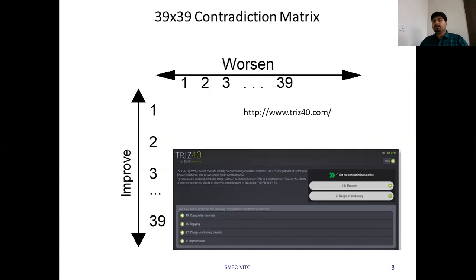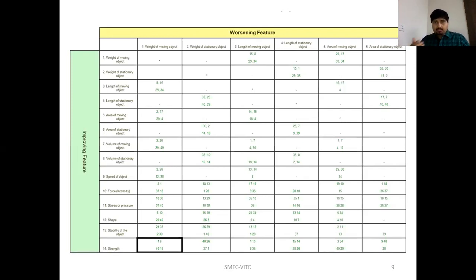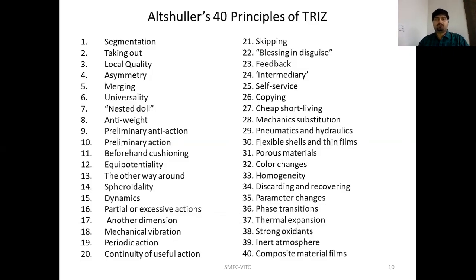You need to identify two parameters: the strengthening parameter you want to improve in your product, and the worsening factor that you need to identify. A snapshot from triz40.com shows how you can directly input the strengthening factor and the worsening factor, and automatically receive the principles which can be utilized to develop a systematic way of inventing new ideas. Based on the two contradictory features, you identify the intersection in a 39×39 matrix to find the most appropriate principles.